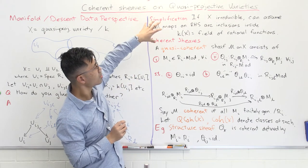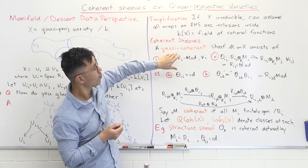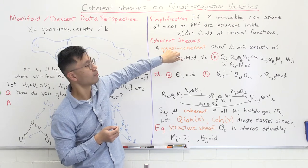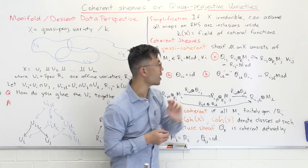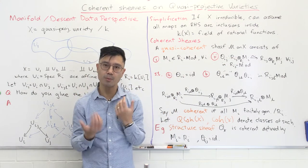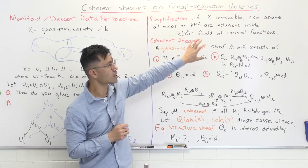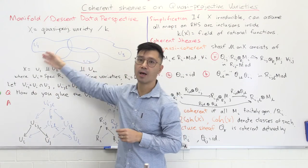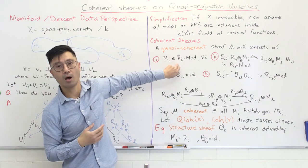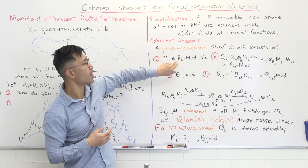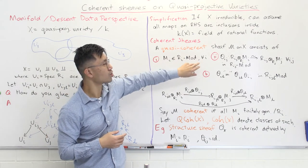So what's a coherent sheaf? We'll start with the notion of a quasi-coherent sheaf, which is a little bit more general. We'll denote it with a script M on X. A coherent sheaf on an affine variety is just a module over the corresponding coordinate ring, so Mᵢ is an Rᵢ-module, and you need one for each of the patches.